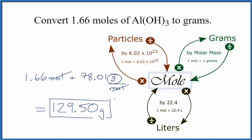If we were given grams and asked to find how many moles of aluminum hydroxide we had, we just do the reverse. We have grams, so we divide by the molar mass. That gives us moles of aluminum hydroxide.